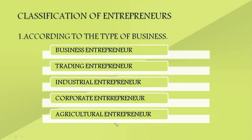Corporate entrepreneurs have a corporate undertaking registered under the Companies Act, giving it a legal entity, and they possess specialized and innovative skills in organizing and managing large-scale undertakings. Agricultural entrepreneurs undertake agriculture and allied activities like farming, marketing of crops, fertilizers, plantations, horticulture, dairy farming, and forestry, covering almost every aspect of the agricultural sector.